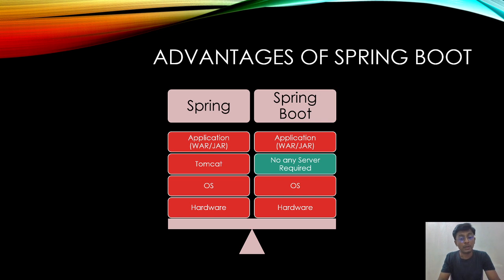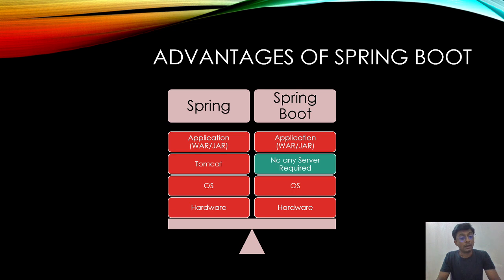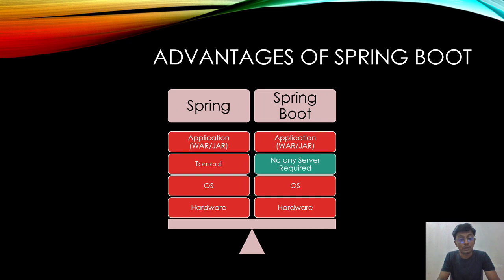In the case of a traditional Spring application, you need server hardware and an operating system — whether Windows or Linux — and then a web server like Tomcat installed before you can execute your web application. But in the case of Spring Boot, there is no requirement for a Tomcat web server. Your application will be executed directly on the JVM, and the embedded servlet container provides the necessary support to execute your program.